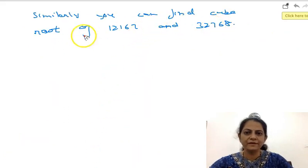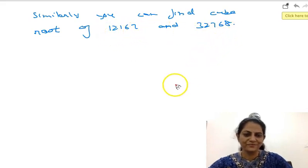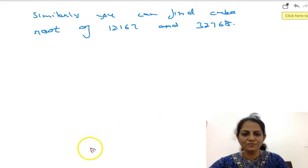Similarly, you can find cube root of the other two numbers 12167 and 32768. I hope it is clear to all of you. Thank you very much. See you in the next video.